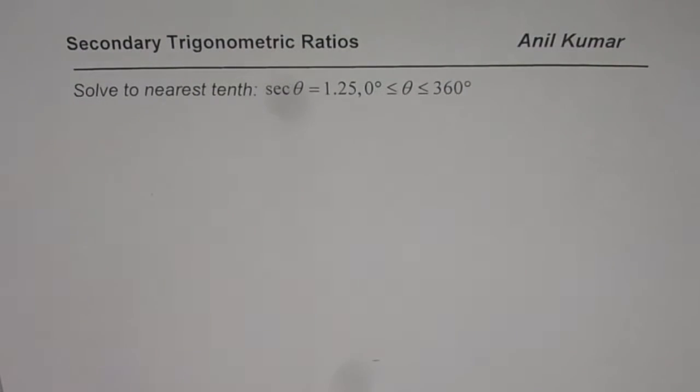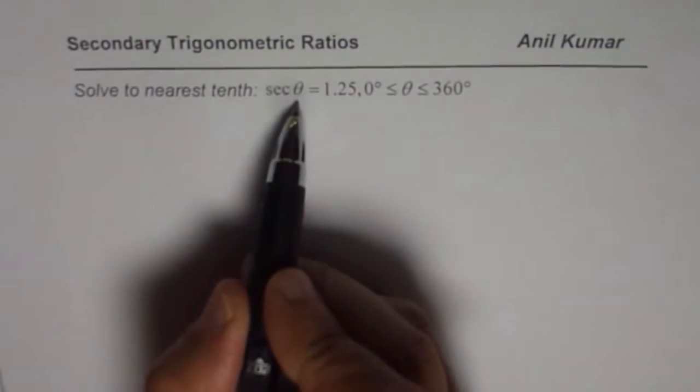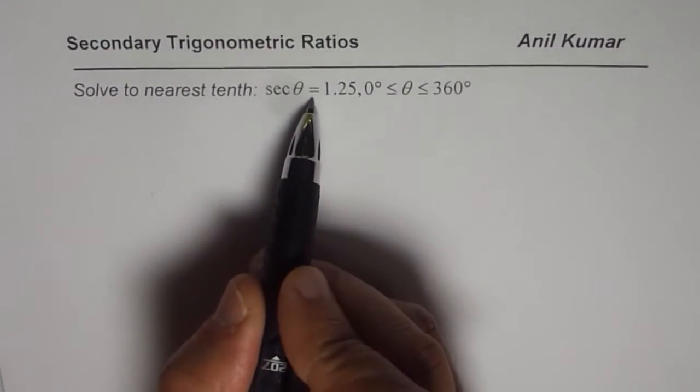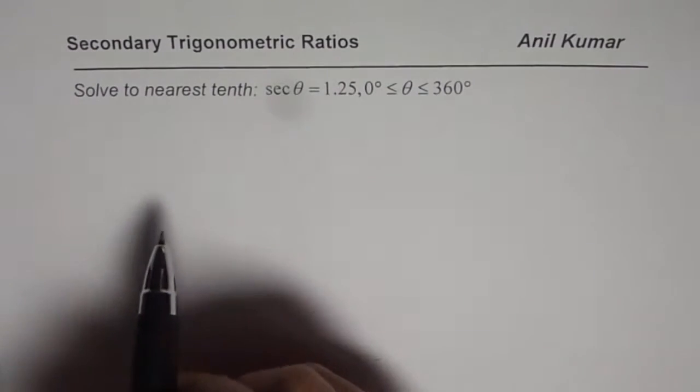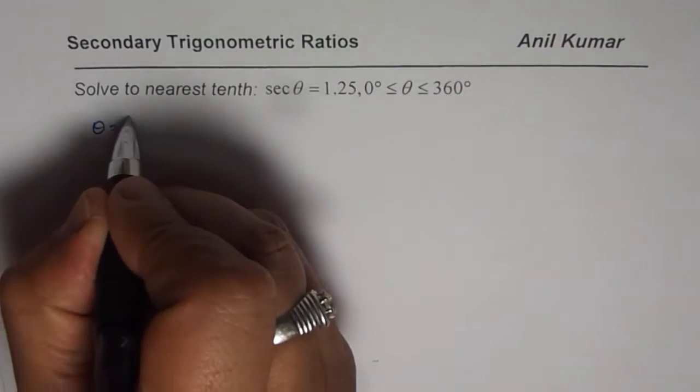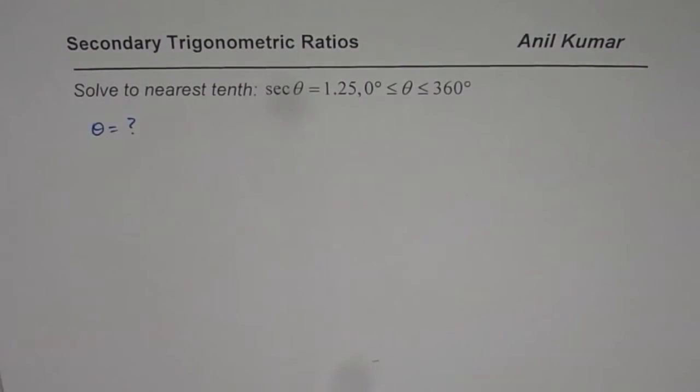Now what does that mean? It really means that we need to find for what angle of theta, secant theta equals 1.25. So we need to find the value of theta. That is what we need.